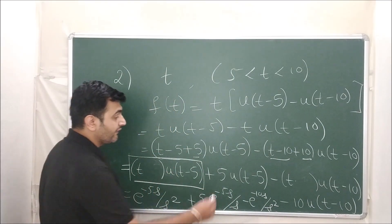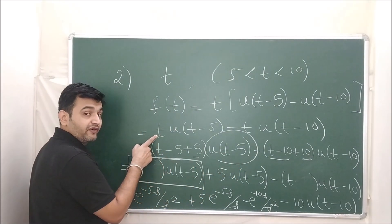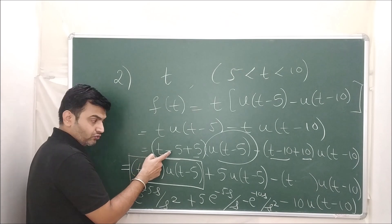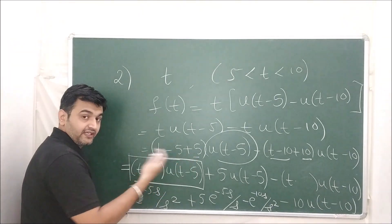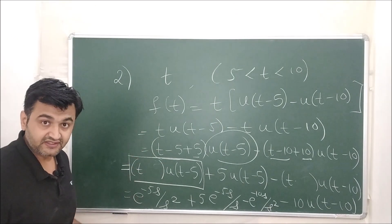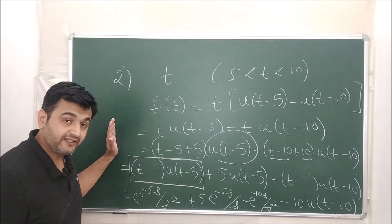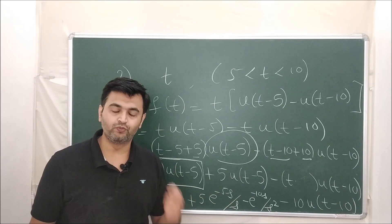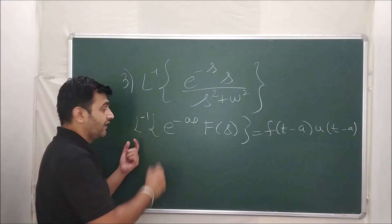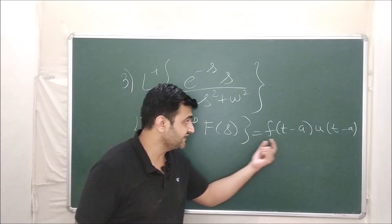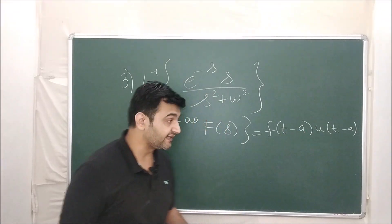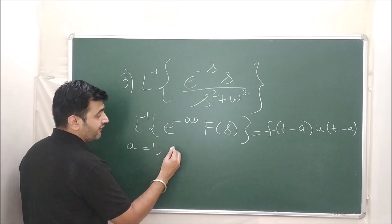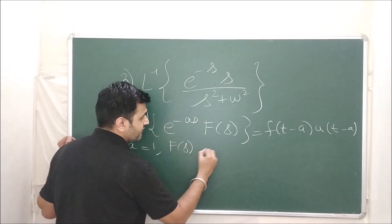Whenever you have u(t − a) along with a function, make sure you bring that minus a into the function as well. To bring minus a you have to add a as well so the equation doesn't change. Now let's take an example on Laplace inverse. The formula is: L⁻¹{e^(−as) · F(s)} = f(t − a) · u(t − a). Comparing, here a = 1 and F(s) = s/(s² + ω²).